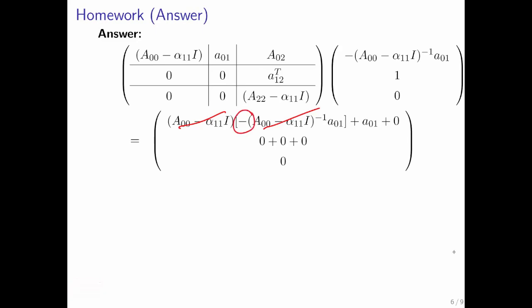That leaves you with minus times a 0 1, which you have to add to a 0 1. That gives you 0, and therefore you get the 0 vector. So again, notice that slicing and dicing allows you to very elegantly show properties of matrices and vectors.